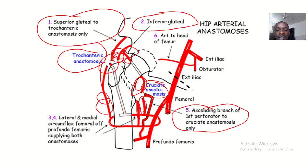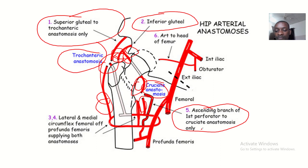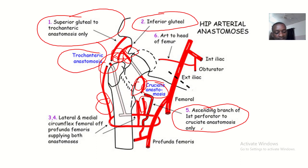To follow along, you can rewind the video to draw out the diagram as I go through it. The last artery mentioned was the first perforating branch of the profunda femoris. With that, we are done differentiating between the trochanteric anastomosis and the cruciate anastomosis. See you in the next one!